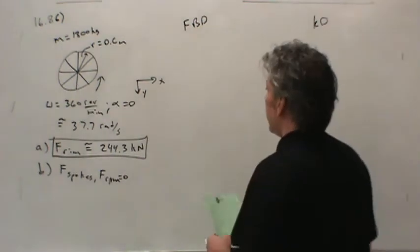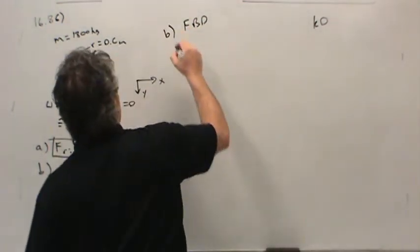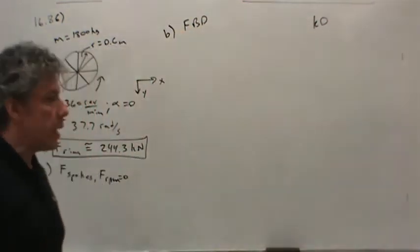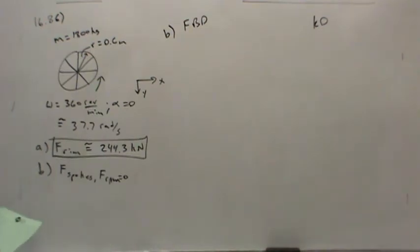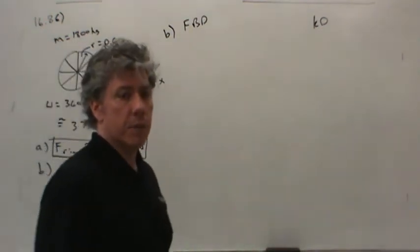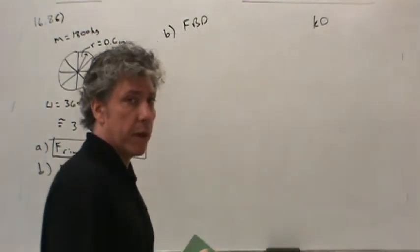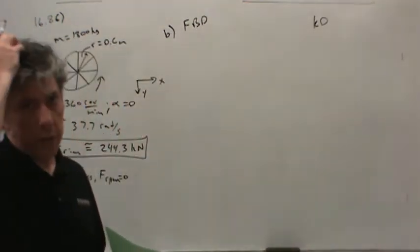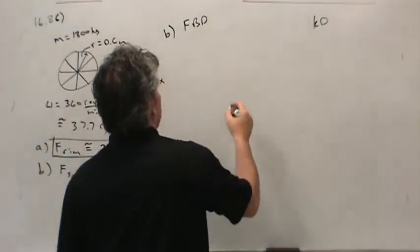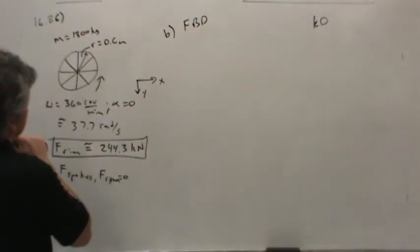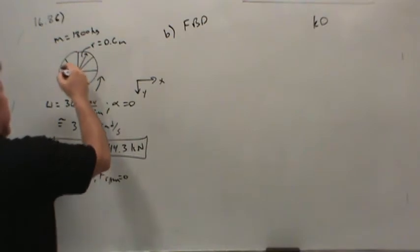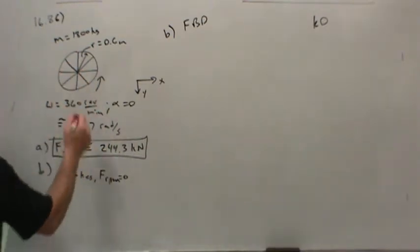What about question B, where the spokes take all of the load rather than the rim taking any of the load? Well, then we need a different free body, right? Because then the spokes are adding to it. We need to figure out the force in the spokes. We need to draw in the spokes. We need to include it. Well, if I were to draw the whole thing, I didn't know where the wheel like this, but that's not very useful. What if I were to take a segment of this?